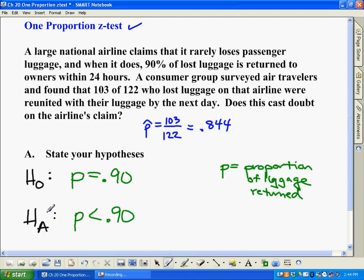We have our null, we have our alternate. The null is always it's still what it was, and the alternate will change depending on the scenario, and we always have to define P as well.